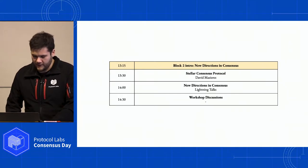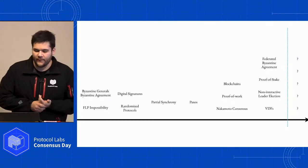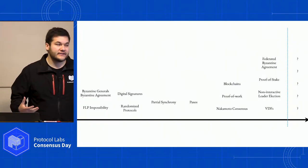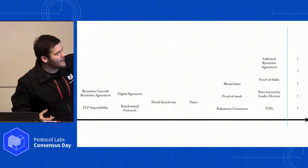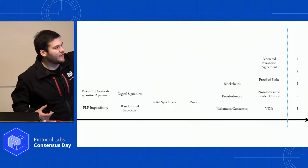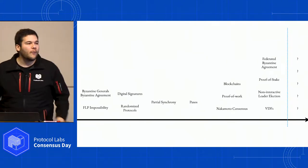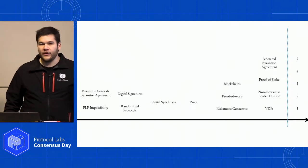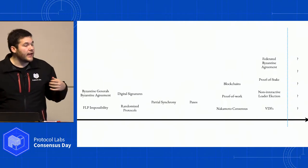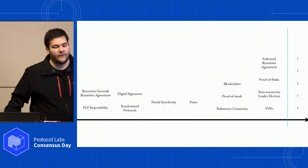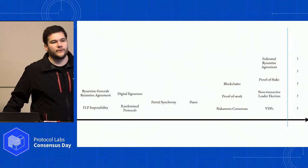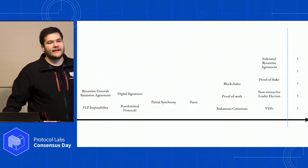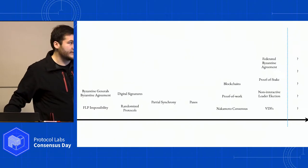One thing I wanted to start with is reflecting back on the history of consensus. I might have missed some of the ordering here, but there's been a whole bunch of really critical results along the way that have refined our understanding of the problem and of different ways of making it useful for all kinds of systems with different properties.